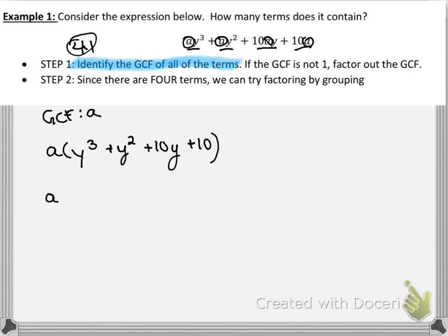So inside these brackets, I have Y cubed plus Y squared plus 10Y plus 10. So factoring by grouping is exactly what it sounds like. I'm literally going to group the first two terms together, and then group the second two terms together.